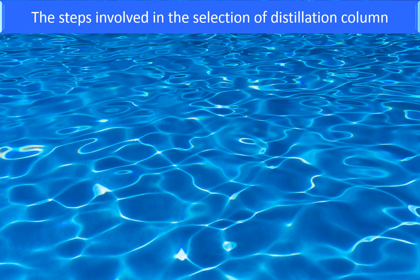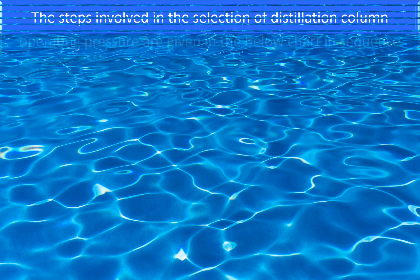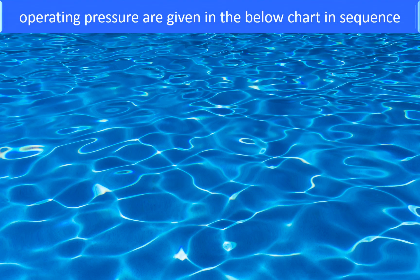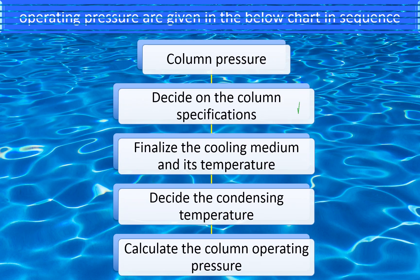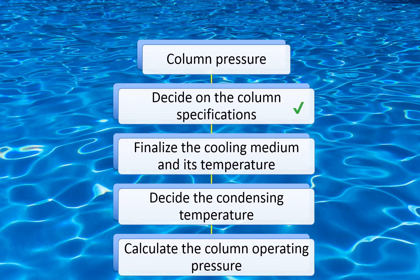The steps involved in the selection of distillation column operating pressure are given in the chart below in sequence: decide on the column specifications, finalize the cooling medium and its temperature, decide the condensing temperature, and calculate the operating pressure.